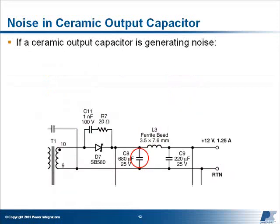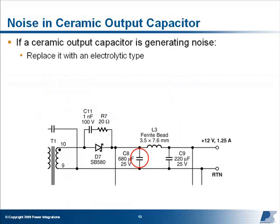If a ceramic output capacitor is identified as a noise source, consider replacing it with an electrolytic type or changing to a capacitor with a different dielectric. Also consider replacing it with multiple ceramic capacitors in parallel. The reduction in each capacitor size will reduce its surface area and change the mechanical resonance of the capacitor.